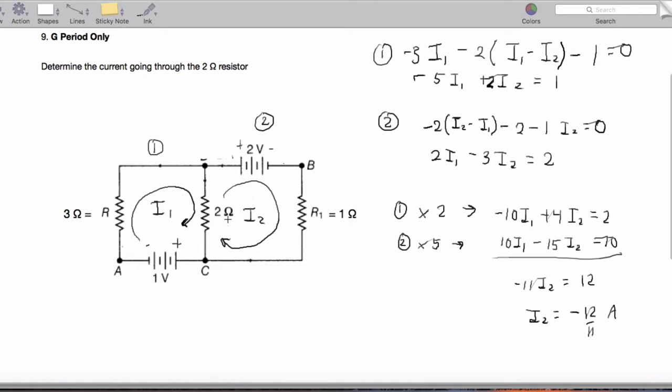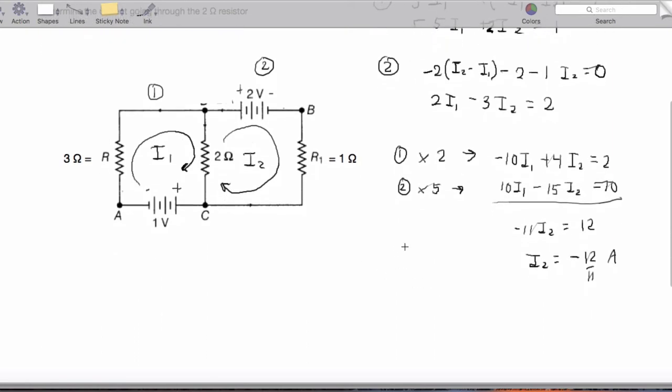We do not need to change any arrows; we just leave it as a negative. Now I'm going to back substitute. I'm plugging this back into equation 2.